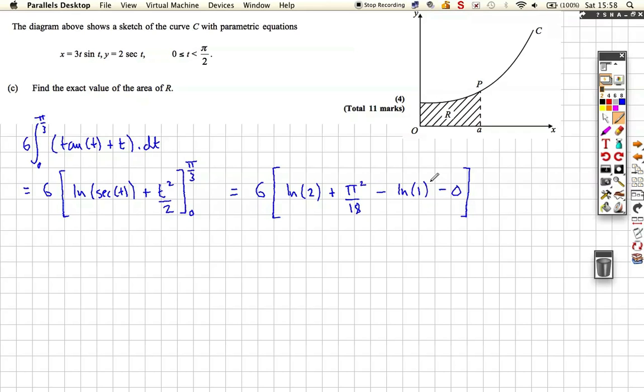So really what we get is we get 6 ln 2 plus pi squared over 3, because there's 6 in the 18, it can cancel. So pi squared over 3, and that's our exact value. If we're asked to actually work out a number, we could just bang this into our calculator, get a value out, and we could write that down. In this case we're asked to find the exact value, so we just stop there, 6 ln 2 plus pi squared over 3.